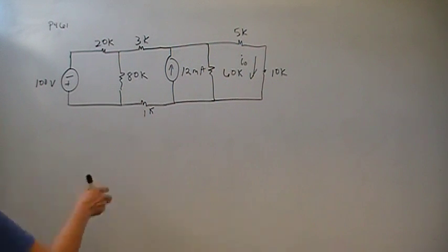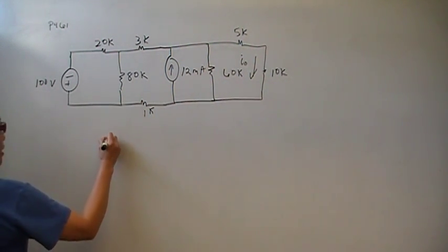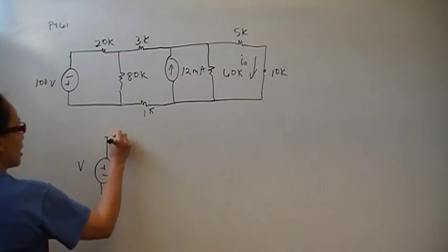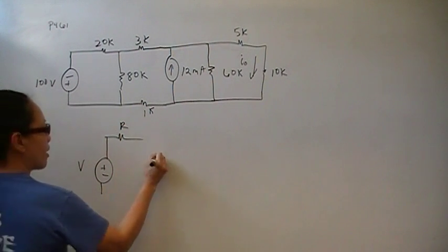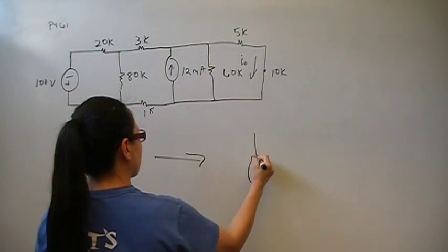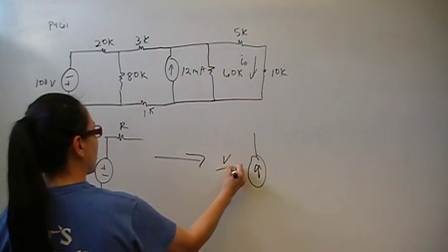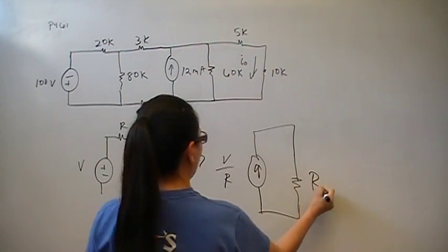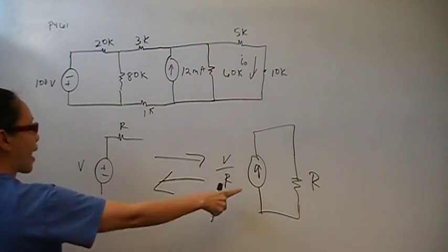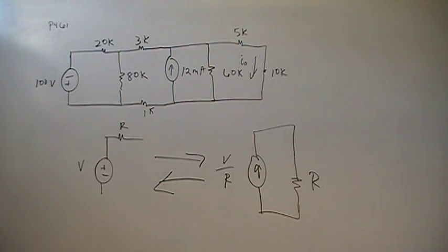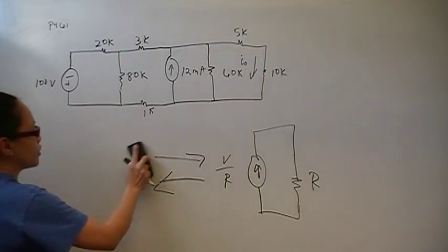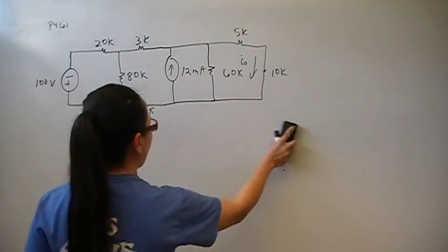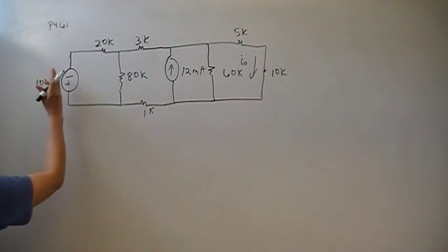Let's get started. Source transformation says that if you have a voltage source in series with a resistor, that is the same thing as a current source of value V over R in parallel with that resistor, and vice versa. If you have a current source in parallel with a resistor, it is exactly identical to a voltage source in series with a resistor. We're going to start from the left and go right.